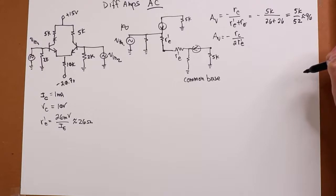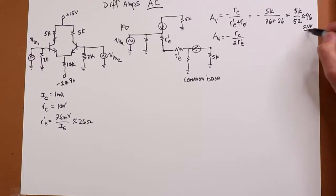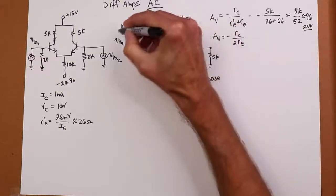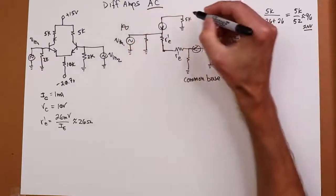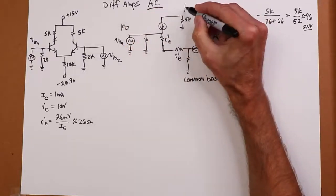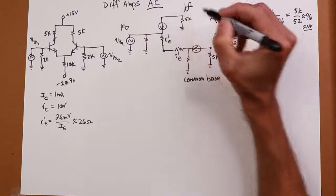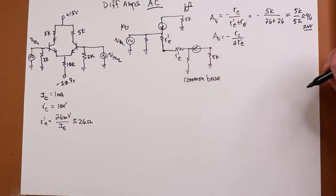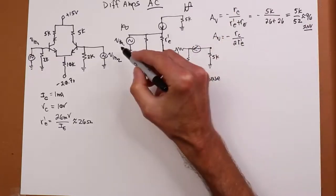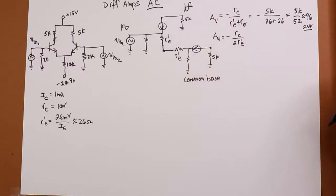That gain is inverting. So if that's the input phase, the output phase is flipped — about 100 times bigger. One millivolt in gives roughly 100 millivolts out, inverted.